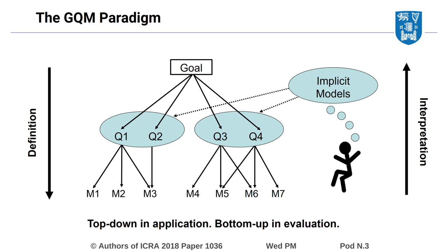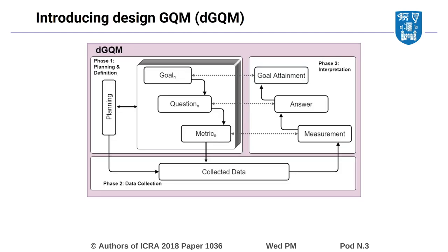In this paper, we define a structured three-phase process for adapting GQM for applications in robot design. This new method, which we call DGQM, is applied to a robot design use case that involved developing a highly adaptable gripper for a general-purpose service robot.